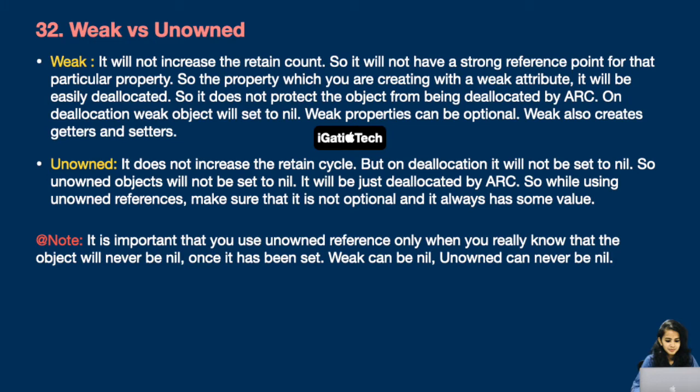On deallocation, a weak object will be set to nil. Weak properties can be optional. Weak also creates getters and setters. Now, unowned: it does not increase the retain cycle, but on deallocation it will not be set to nil — it will just be deallocated by ARC. When using unowned references, make sure it is not optional and always has some value. Important note: weak can be nil, unowned can never be nil.